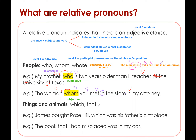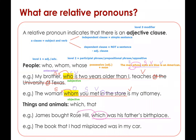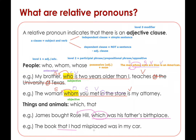Now let's move on to which and that. 'James bought Rose Hill, which was his father's birthplace.' We have relative pronoun which referring to antecedent Rose Hill — that is a place, not a person, so we can use which. And: 'The book that I had misplaced was in my car.' The relative pronoun that is referring to antecedent the book.